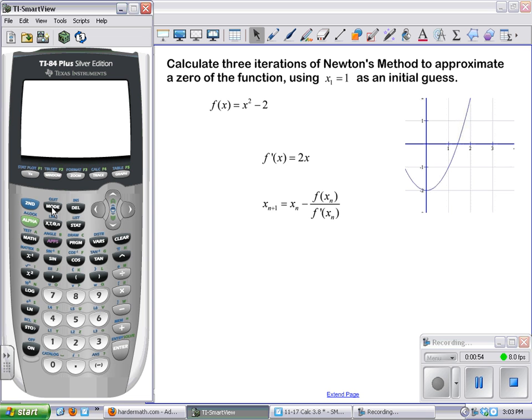Now what we want to do is we want to write a function that we can just continually iterate in order to get ourselves closer to that zero. So first thing we want to do is put in our initial guess.